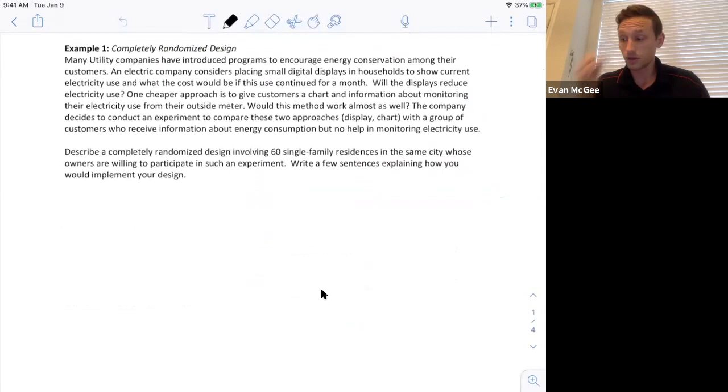Many utility companies have introduced programs to encourage energy conservation among their customers. An electric company considers placing small digital displays in households to show current electricity use and what the cost would be if this continued for a month. Will the displays reduce electricity use? One cheaper approach is to give customers a chart and information about monitoring their electricity use from their outside meter. Would this method work almost as well? The company decides to conduct an experiment to compare these two approaches, the display versus the chart, with a group of customers who receive information about energy consumption but no help in monitoring electricity use.